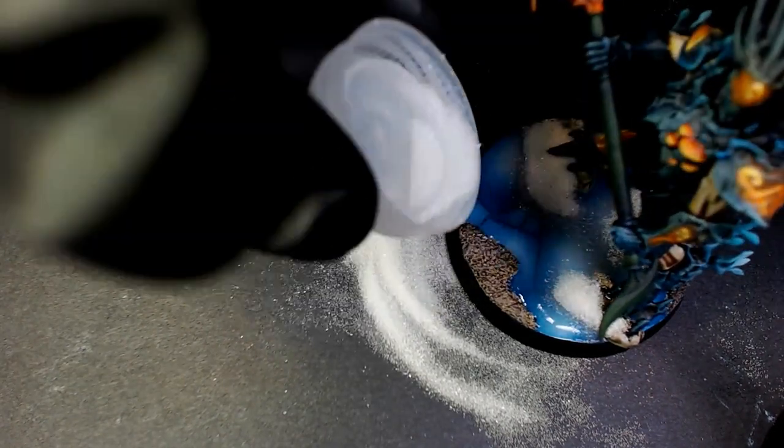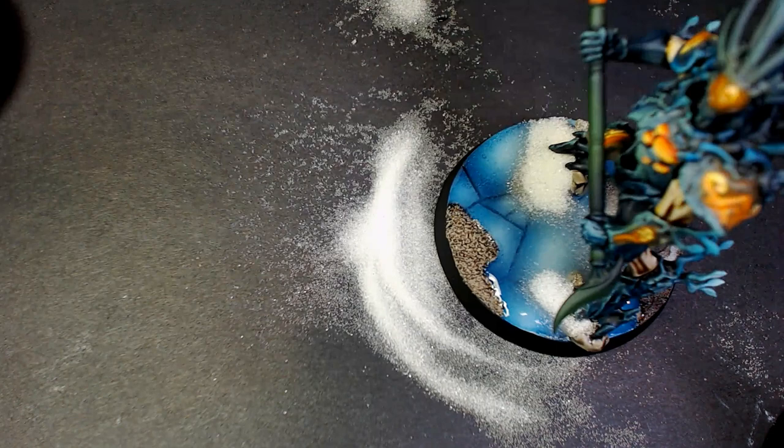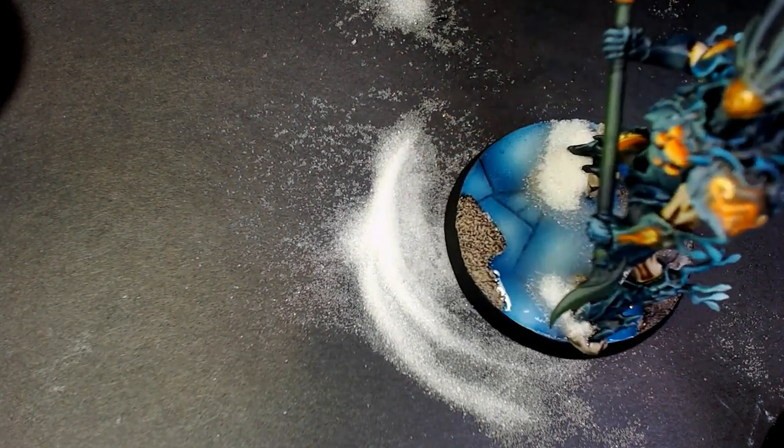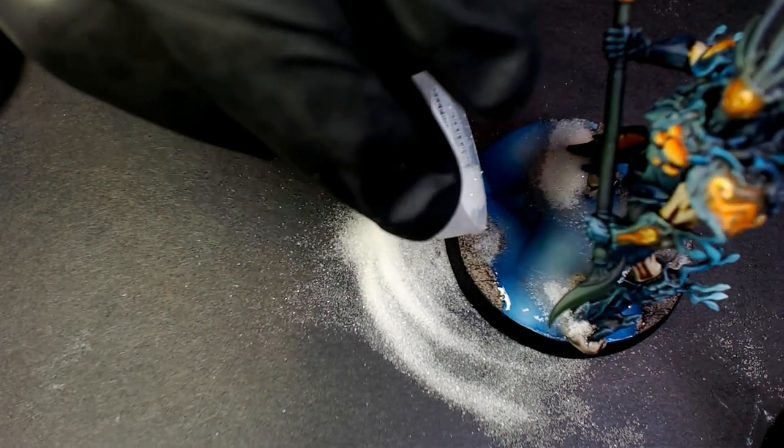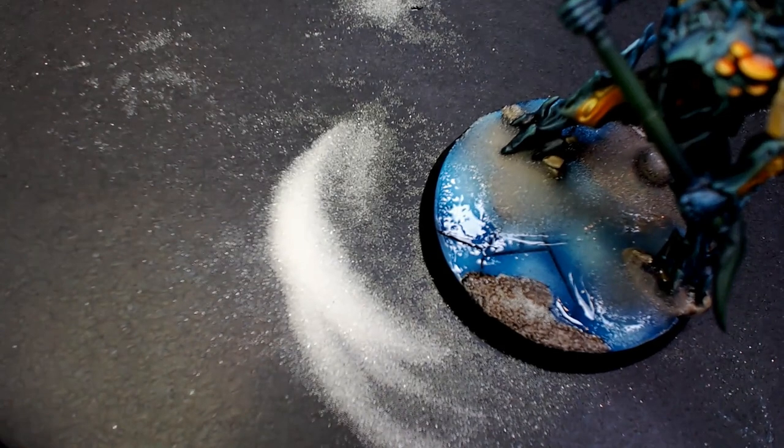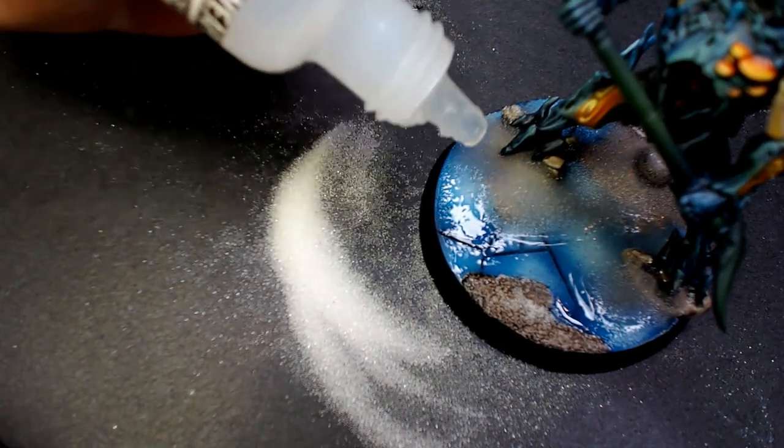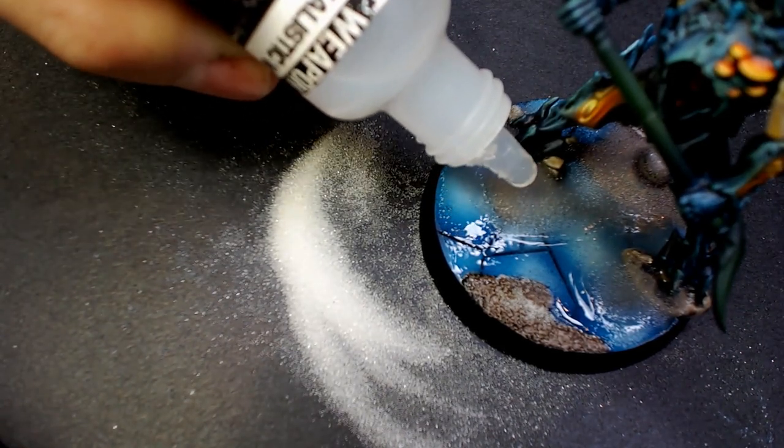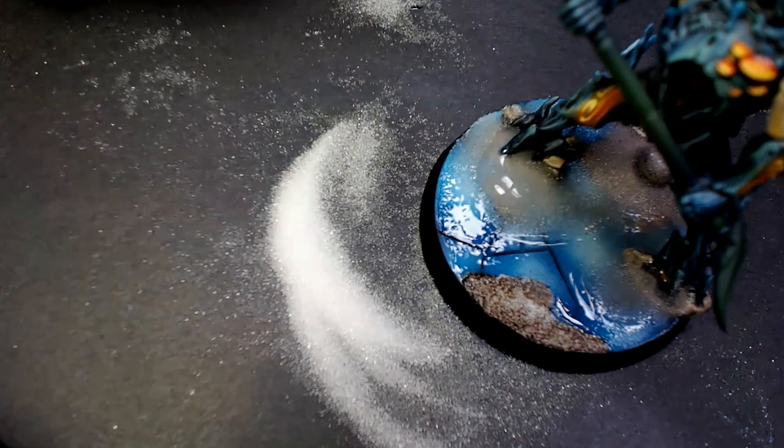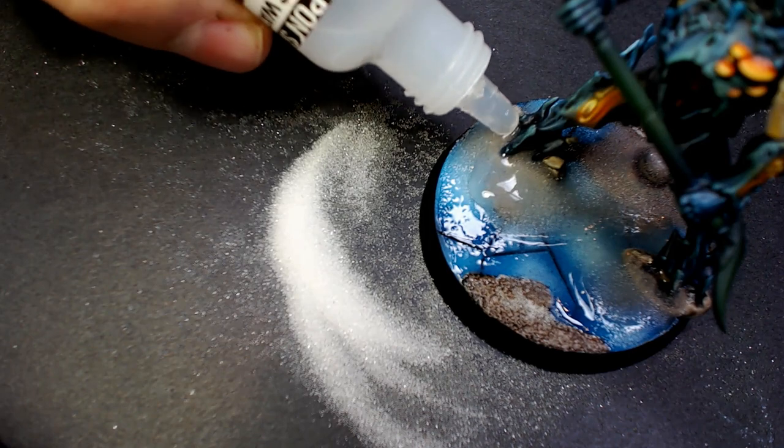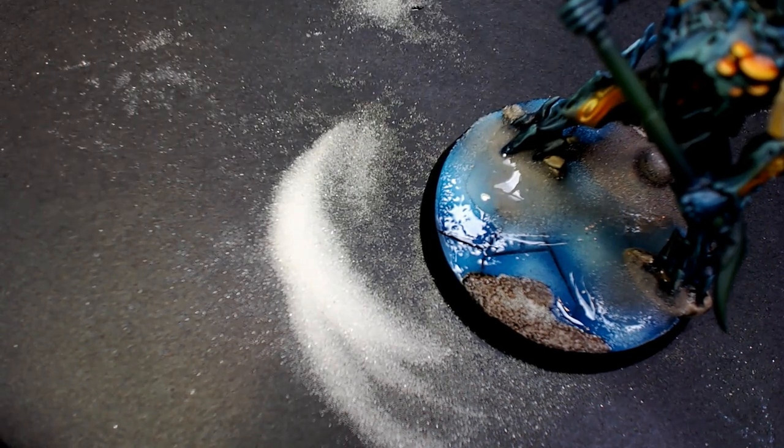It's going to be slushy type snow so you can see through it a little bit. It's a really interesting effect over this nice sheet of liquid resin that's creating our top coat of ice, and underneath is that cracked effect.